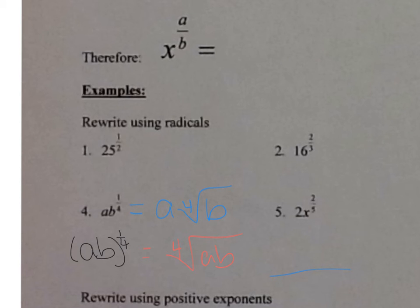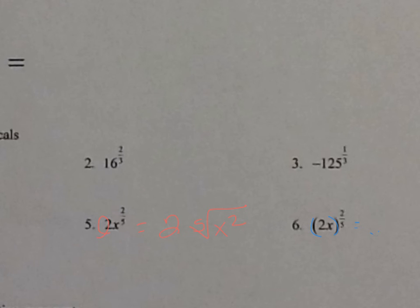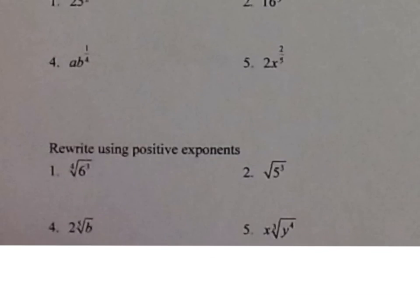Example 5: 2x to the two-fifths power — only x is raised to the two-fifths, so it's 2 times the fifth root of x squared. Example 6: (2x) to the two-fifths power — here parentheses mean the whole 2x is raised to the two-fifths, so it's the fifth root of (2x) squared. Note: if you write the fifth root of 2x² without parentheses, you're only squaring the x, giving the fifth root of 4x² — not the same thing.